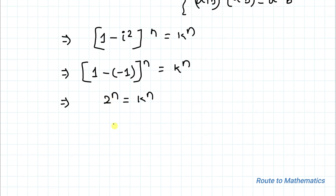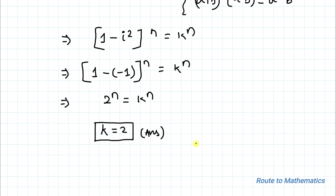As the powers are the same, we can write k equals 2. So we are asked to find the value of k, and thus our answer is 2. I hope you have understood the solution. Thanks for watching. Please subscribe to my channel and hit the like button for more such interesting videos. Thank you.